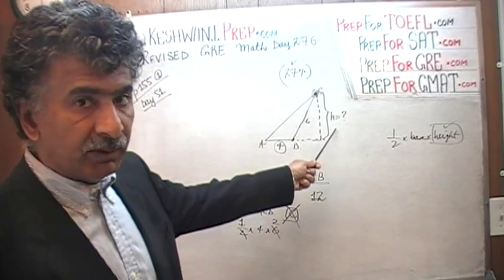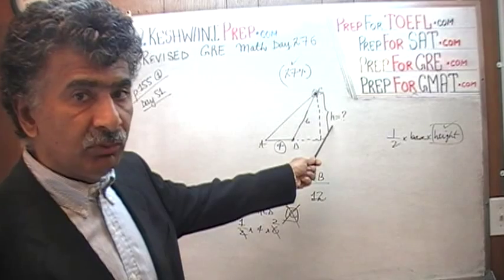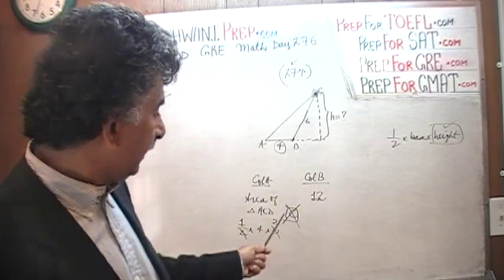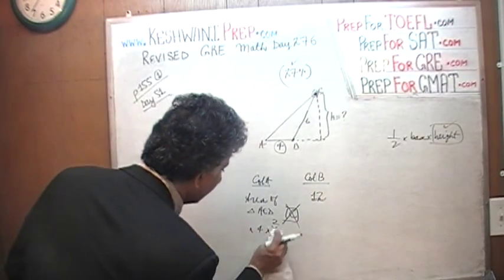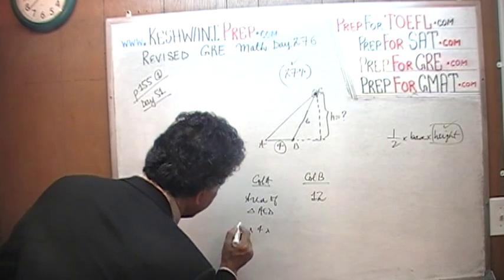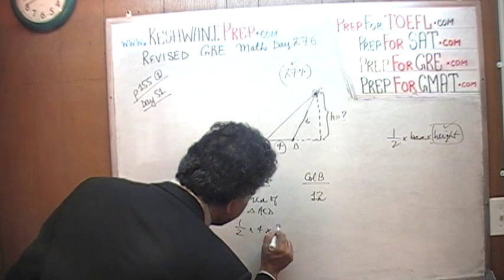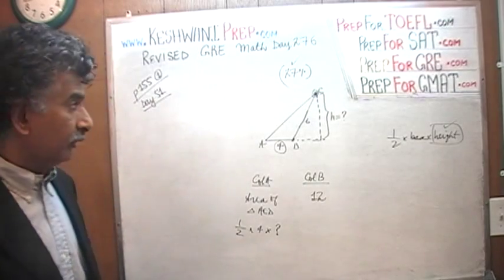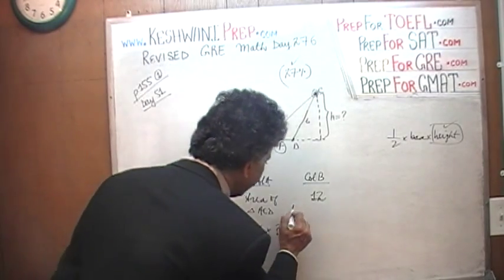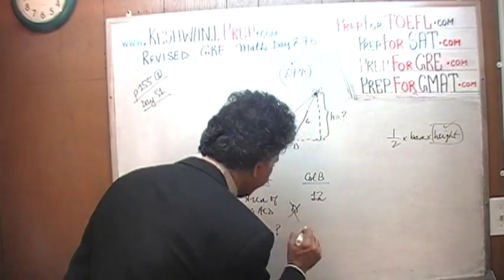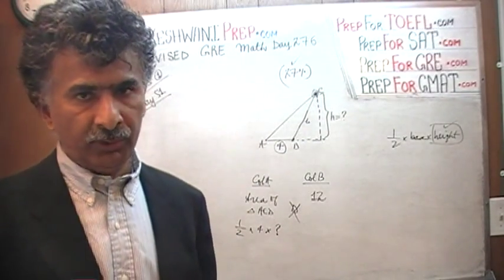The second category of people — a slightly higher level of thinking — realize that 6 is not the height. Since we do not know the height, they say we cannot possibly compare, so they answer D. But that answer is also wrong.